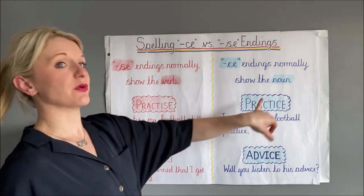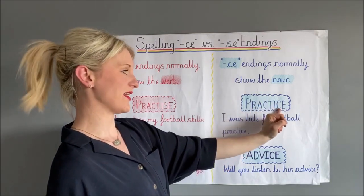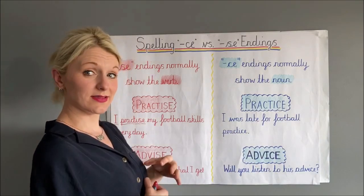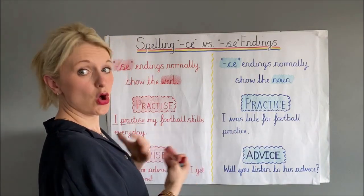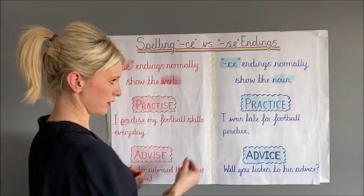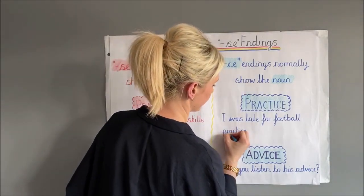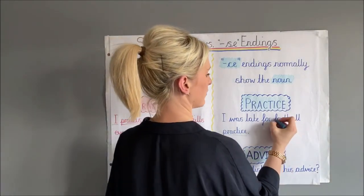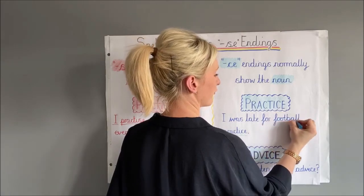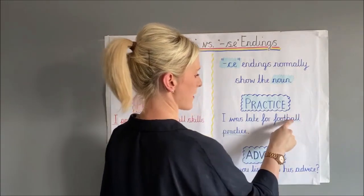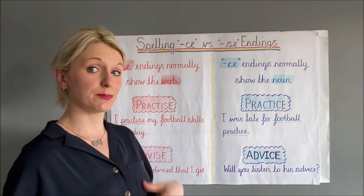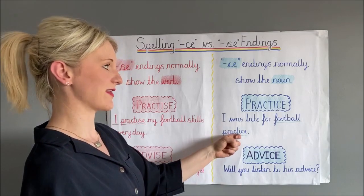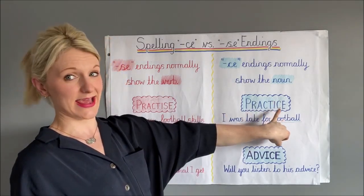On this side, the word is also pronounced practice but this time with a CE ending. It is being used as a noun, which means it might have an adjective or a determiner before it. I can see the word practice and I know it's a thing because it's got an adjective before it. We don't normally think of football as an adjective, but it's describing what type of practice it was. It was football practice — it is a thing, an event that we're going to. So it is a noun, and it would have the CE ending.